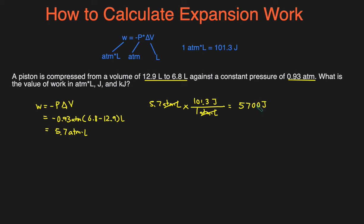To turn that into kilojoules, we can just divide by a thousand, because to turn joules into kilojoules, you divide by a thousand. That'll be 5.7 kilojoules. And that's it.